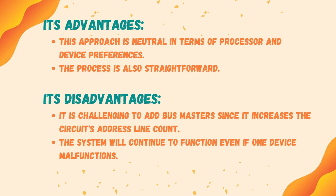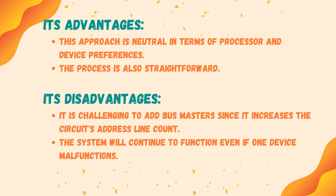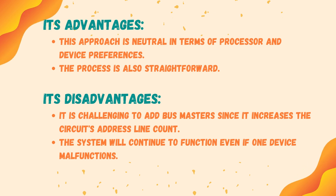The disadvantages of the polling priority method are that it is challenging to add bus masters since it increases the circuit's address line count, and the system will continue to function even if one device malfunctions.